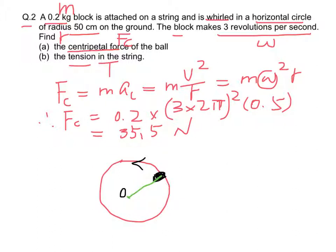Since the tension is the only force that provides the centripetal acceleration, tension in this case equals the centripetal force. Therefore, the tension in the string is equal to 35.5 newtons.